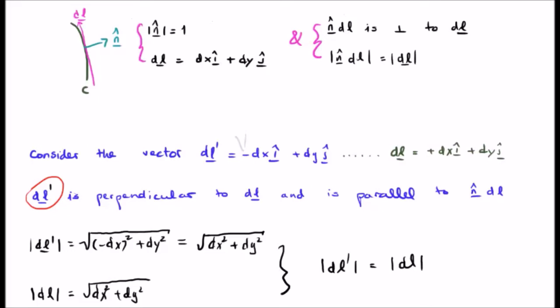Now what is the magnitude of DL prime? Well, the magnitude is nothing else but the sum of the squares of the components square rooted. But the negative component here inside the square is going to become positive. And as a result, the magnitude of DL and the magnitude of DL prime are the same.